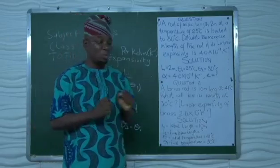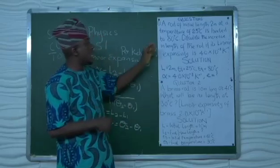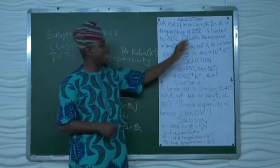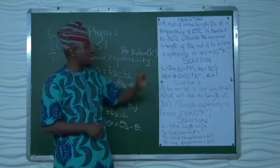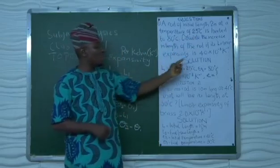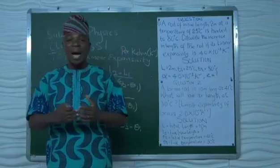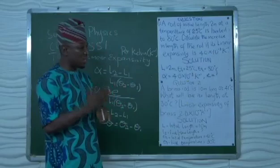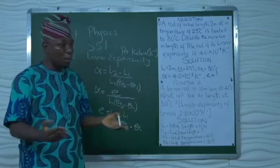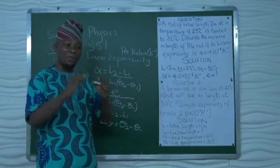Let's look at some questions on linear expansivity. Question 1: A rod of initial length 2 meters at a temperature of 25 degrees Celsius is heated to 80 degrees Celsius. Calculate the increase in length of the rod if its linear expansivity is 4.0 times 10 to the power of minus 3 per Kelvin. When solving this question, as a physics student preparing for an exam, it is very important you know your parameters, because your parameters give you marks.